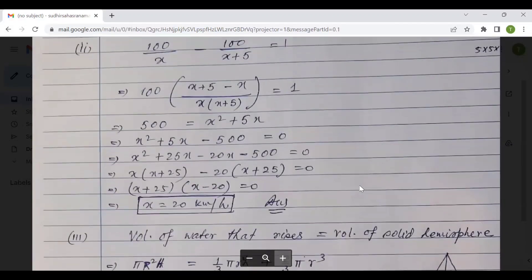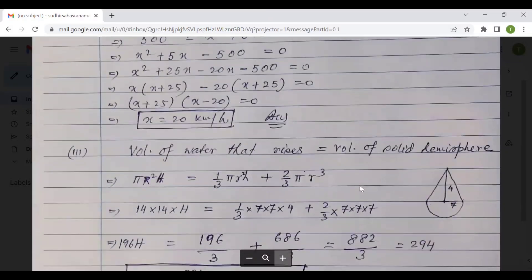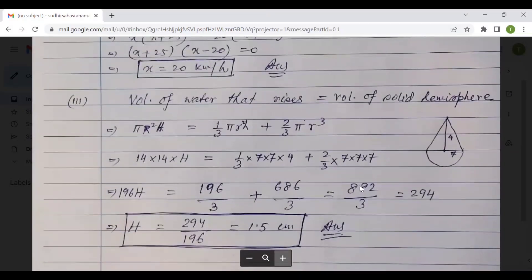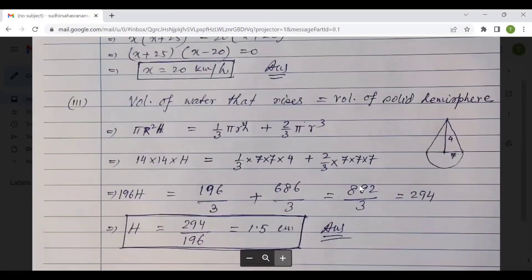This is part two. Part number two, x equals to 20 is the value. Then we go to part three. h equals to 294 by 196 equals to 1.5 centimeters. That is the final answer. That is as far as question number seven is concerned.